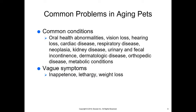Don't get in the habit of saying 'that's just an old pet, that's how they act.' While certain things are due to aging, many are diseases we can treat. Don't think of age as the disease. With aging pets that may have a variety of diseases, we often see vague symptoms: inappetence, lethargy, and weight loss. We need to look for the underlying disease rather than consider it a normal aging process.